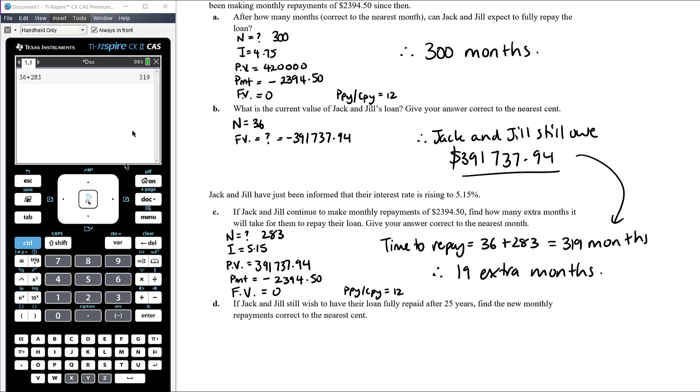Okay, so it's a bit over a year and a half extra to repay the loan if we stick with the original repayment, even though the interest rate has risen. And obviously extending that bit longer means that ultimately, not only is the interest rate higher, but we're spreading it out over a longer period of time, so we're actually going to end up paying more interest. Okay, part D, if Jack and Jill still wish to have their loan fully repaid after 25 years. Okay, so let's just have a quick look at that original. So the 300 months, sorry 300 months was 25 years. Okay, so the original plan, if they'd stayed on 4.75% interest the whole time, their loan would have been paid off in 25 years. If Jack and Jill still wish to have their loan fully repaid after 25 years, find the new monthly repayments correct to the nearest cent.